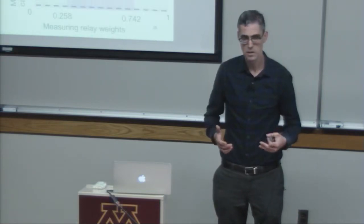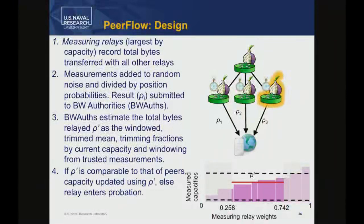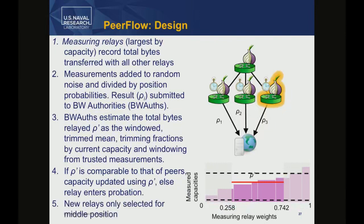Using this estimate, the bandwidth authorities compare it to what the relay should have sent. If peers with similar weights sent half as much or twice as much traffic, they infer the relay isn't actually carrying its load and enter a probation period, giving the relay a chance to prove it's actually fast enough. Rejoining the network also involves starting in the middle relay position.